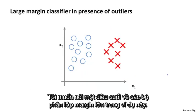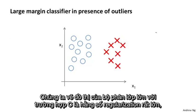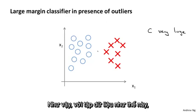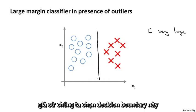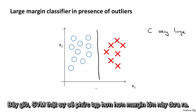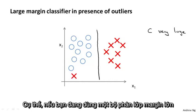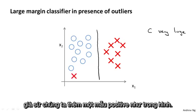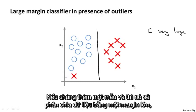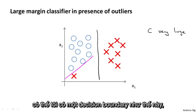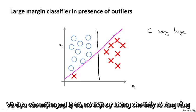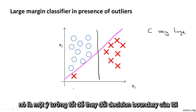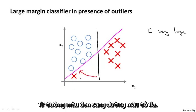One last thing about large margin classifiers: we worked out this large margin classification setting in the case where C, the regularization constant, was very large — say 100,000. In that case, the SVM chooses a decision boundary that separates the positive and negative examples with a large margin. However, the SVM is actually more sophisticated than this, because if all you're doing is using a large margin classifier with very large C, your learning algorithm can be sensitive to outliers. Adding just a single outlier example might cause the SVM to change its decision boundary from the good black line to the worse magenta line.